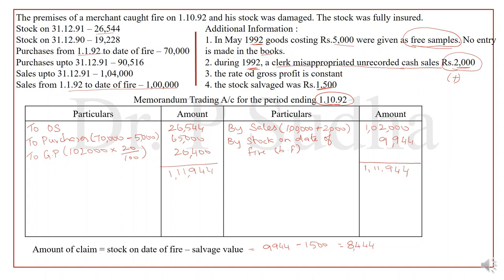I hope you have understood how to calculate fire insurance claims when the stock is fully insured — that is, there is no average clause — both when GP ratio is given and when GP ratio is not given. Thank you for watching.